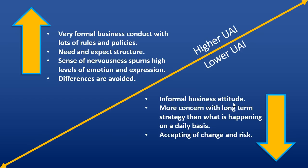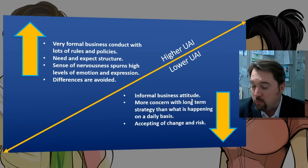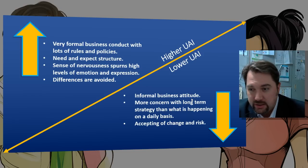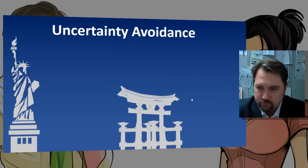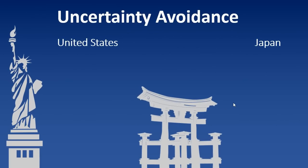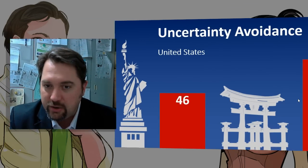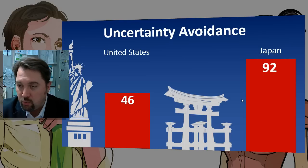You're more comfortable going into something without knowing the outcome entirely step by step. If you want to avoid uncertainty, that's the higher score — and that is Japan, which has one of the highest scores in the world. One reason I attribute this is that Japan has some of the highest rates of natural disasters in the world, making preparedness a big part of the culture.